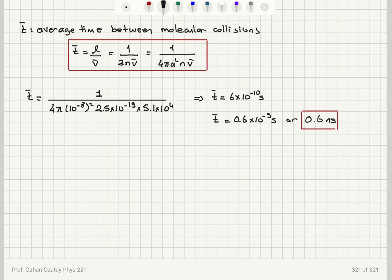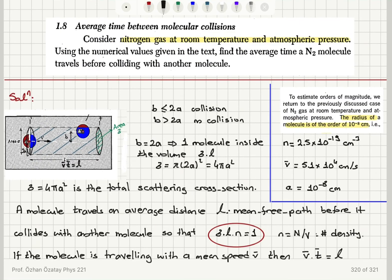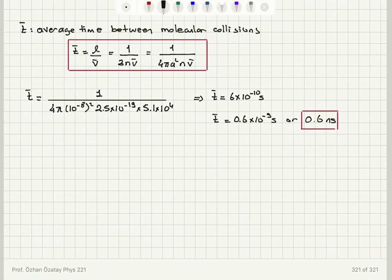From the mean speed relation, L = v̄ × t̄. Therefore t̄ = L / v̄ = 1 / (4πa² × n × v̄). Substituting the values from the previous problem, including the molecular radius of 10^−8 cm, we obtain t̄ = 6 × 10^−10 seconds, or 0.6 nanoseconds.